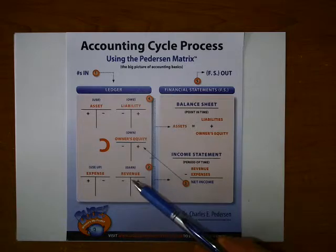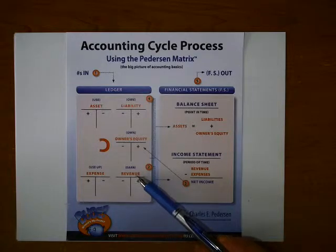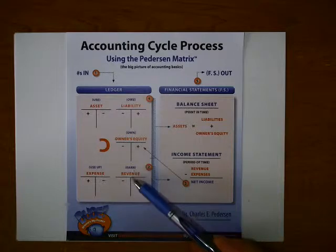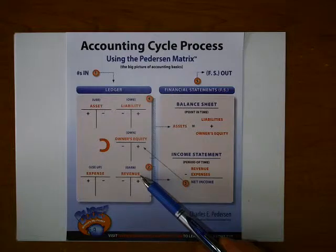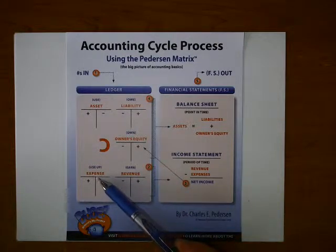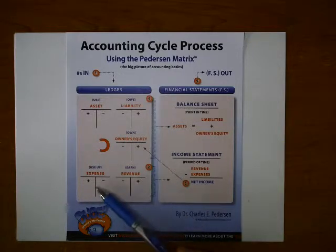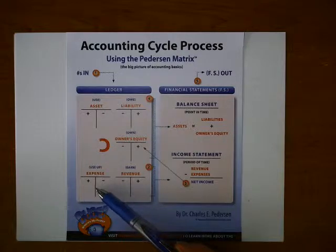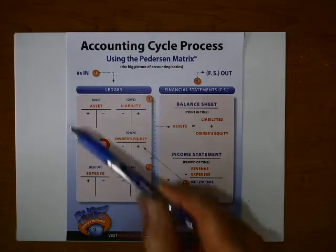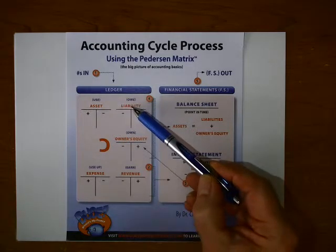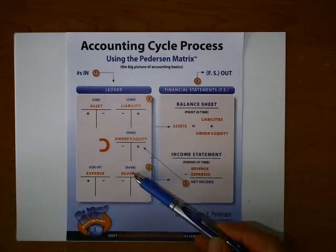Revenue is what we earn in the business. You earn revenue by, say, taking people for rides in your taxi and collecting a fare, or if you're an accountant, you provide accounting services and collect a fee — this is your reason for being in business. And then finally, expense is what you use up to earn the revenue. If we're talking about the taxi company, things that get used up are like oil and gas, the driver's time, and so forth. Asset — what we use. Liability — what we owe. Owner's equity — what we own. Revenue — what we earn. And expense — what we use up.